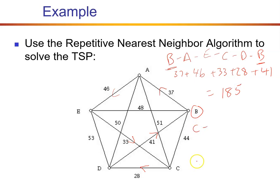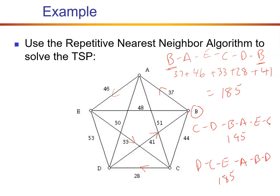We repeat this process with C and D. Starting with C gives a total of 195, and starting with D gives 185. If you did E, you should also get 185. Using this method, the optimal path is 185. That's the repetitive nearest neighbor algorithm.